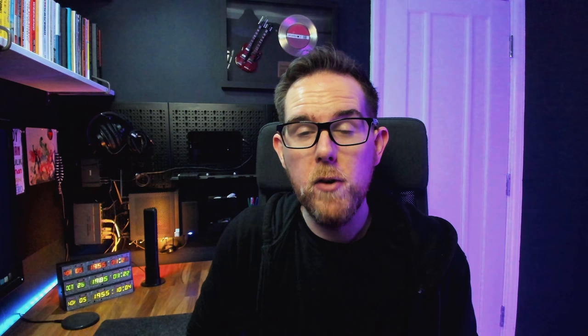When you hear people talking about REST, you often hear the term resources, which is really just a fancy name for storing data. When you build out a REST API, you will build out an endpoint for each of the resources. If you're building out a shopping website, for example, your resources are likely to be your users, your products, the orders, the shopping basket — that sort of thing.